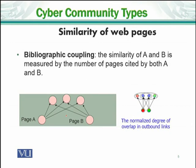Method 3 is Bibliographic Coupling. The similarity of A and B is measured by how many sites cite both A and B — that is, how many pages point to both of them. So to summarize, we have three methods to measure the similarity of web pages: first, direct hyperlinks between pages; second, co-citations where they cite the same pages; and third, bibliographic coupling where the same pages cite both.